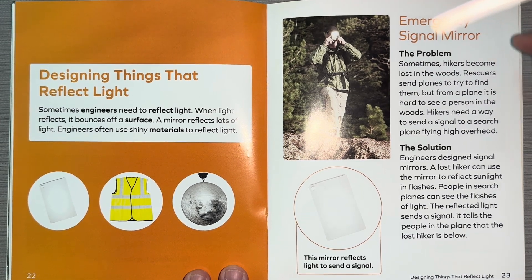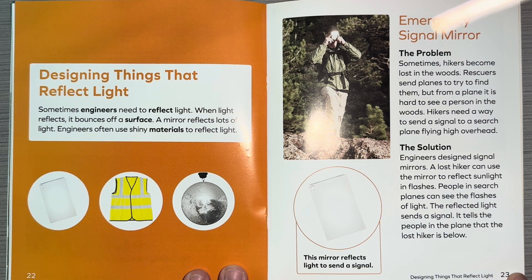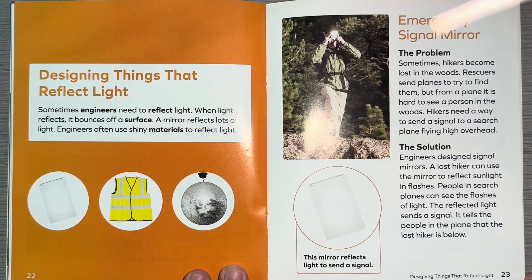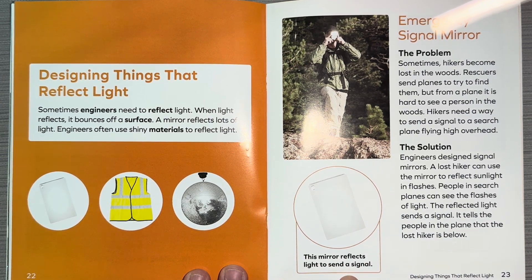Emergency signal mirror. The problem: sometimes hikers become lost in the woods. Rescuers send planes to try to find them. But from a plane, it's hard to see a person in the woods. Hikers need a way to send a signal to a search plane flying high overhead. The solution: engineers design signal mirrors. A lost hiker can use the mirror to reflect sunlight in flashes. People in search planes can see the flashes of light — the reflected light sends a signal and tells the people in the plane that the lost hiker is below. This mirror reflects light to send a signal.